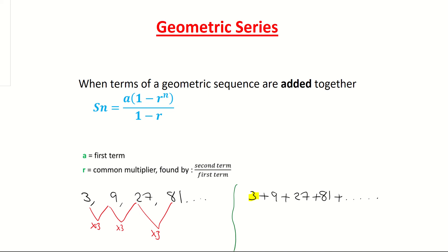So second term divided by the first term or third term divided by the second term and so on. So say for instance I was to take term 4 and divide it by term 3. In this geometric series it would be 81 divided by 27 which would give me a common multiplier or a common ratio of 3 and that would be my R. So let's take a look at an example here in a little bit more detail.